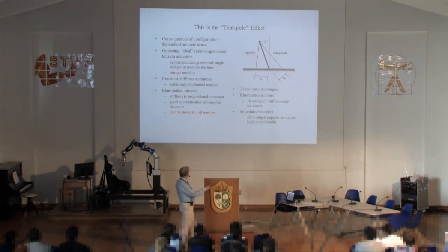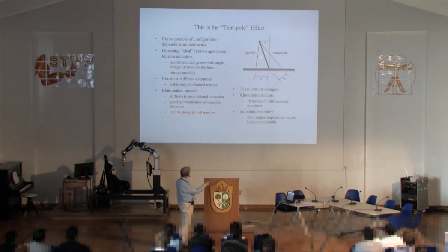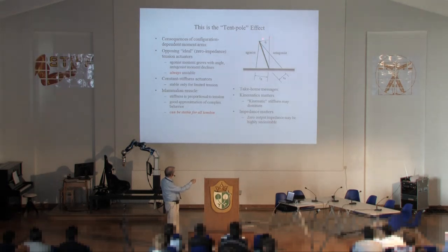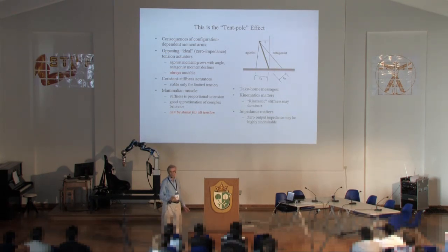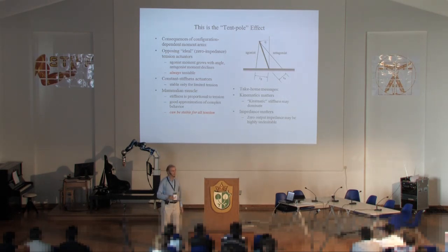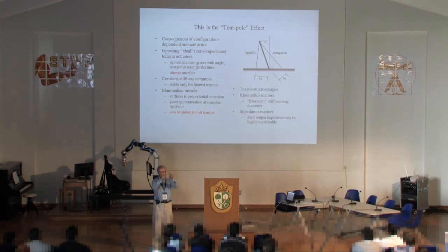This is what I call the tent pole effect. Imagine a pole constrained to rotate about a pivot point but otherwise free to move in a plane. I have two tension actuators — agonist and antagonist — connecting to a base at equal distances from the pivot. As the angle increases, one moment arm gets bigger and the other gets smaller. If these are pure tension actuators — generating tension only, independent of length — then that system is always unstable for any non-zero tension. You tighten up those cables and the thing falls over.